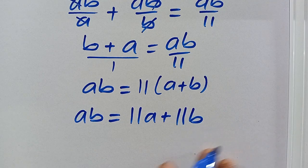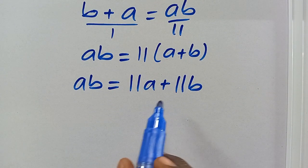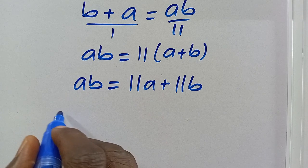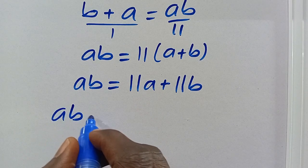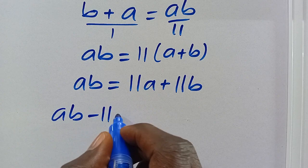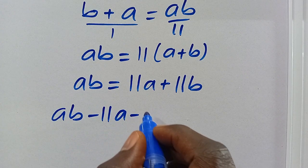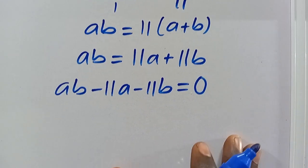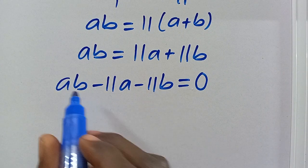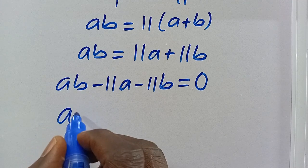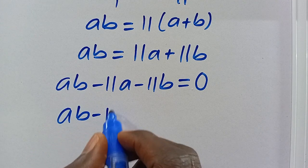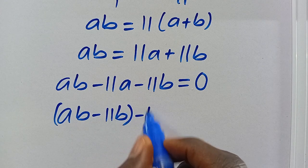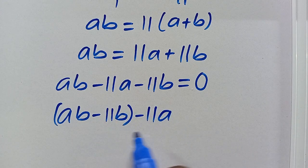From here, let's rearrange the expression by taking all terms to the left-hand side, so we have AB minus 11A minus 11B equals 0. Let's regroup by taking AB minus 11B together, then minus 11A.